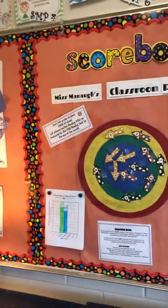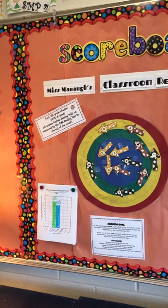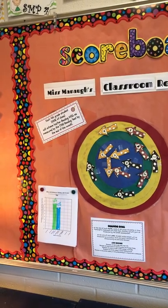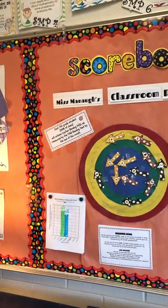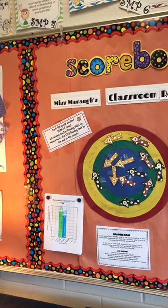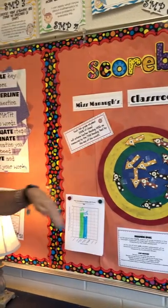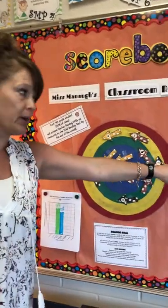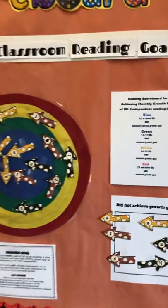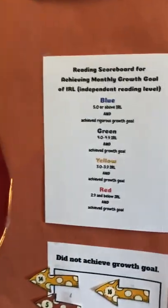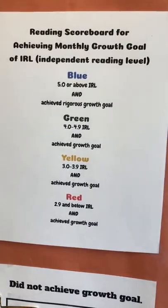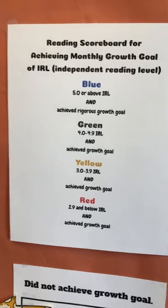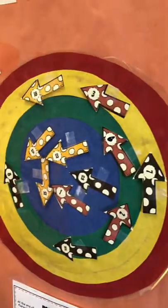Anybody in green met their goal and they're on grade level — exactly where they're supposed to be. Anybody in yellow met their growth goal, but they are below grade level. For fourth grade, that means they are at third grade through third grade, ninth month, anywhere within that range.